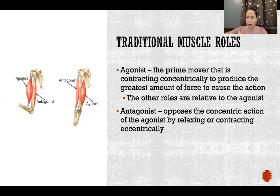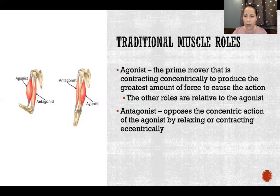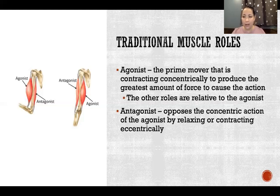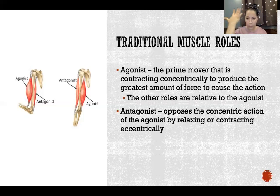For example, in elbow flexion with the forearm supinated, the agonist would be biceps brachii because it's the biggest, strongest muscle and has the most direct line of action in supination. The antagonist would be triceps brachii because it does exactly the opposite — extension of the elbow — when it contracts concentrically. So during elbow flexion with the hand supinated, the agonist is biceps brachii and the antagonist is triceps brachii.